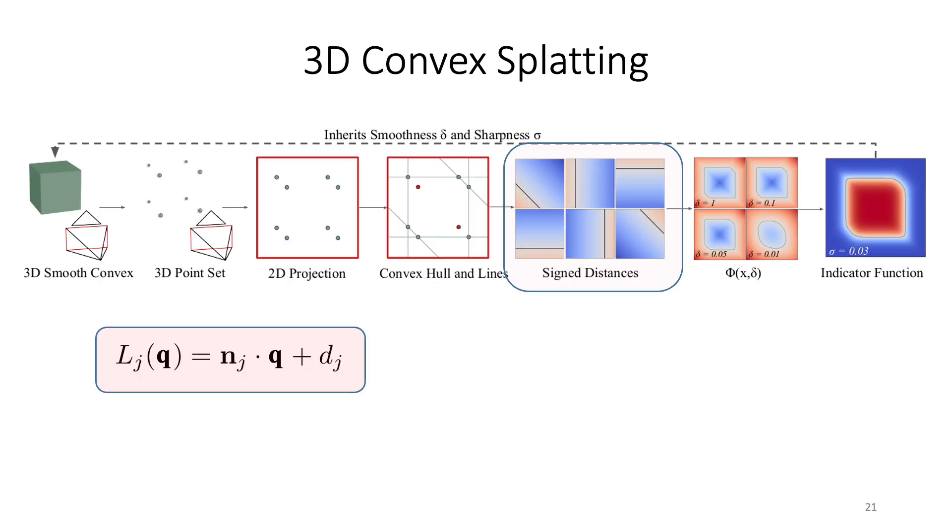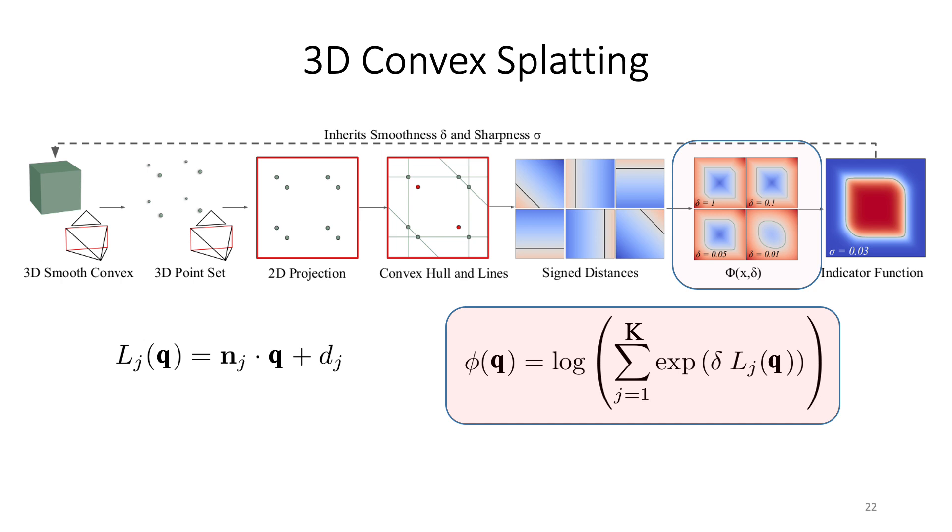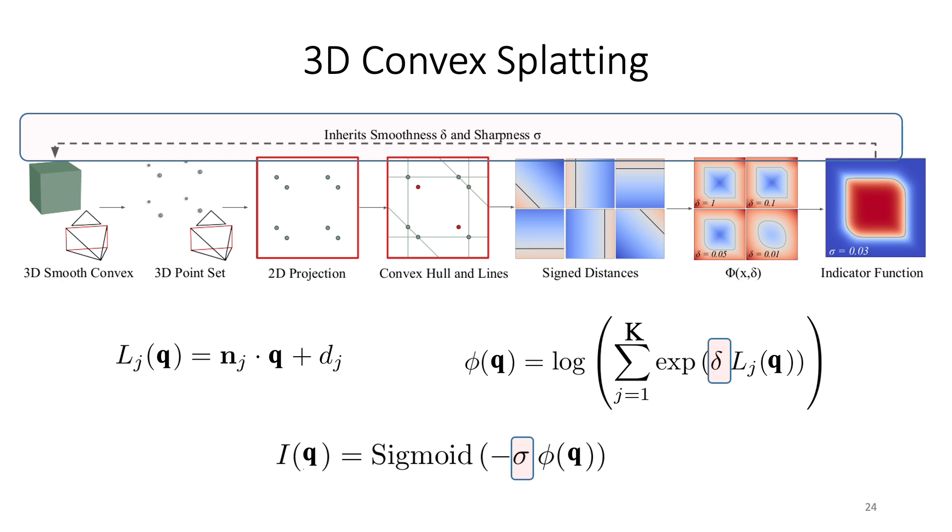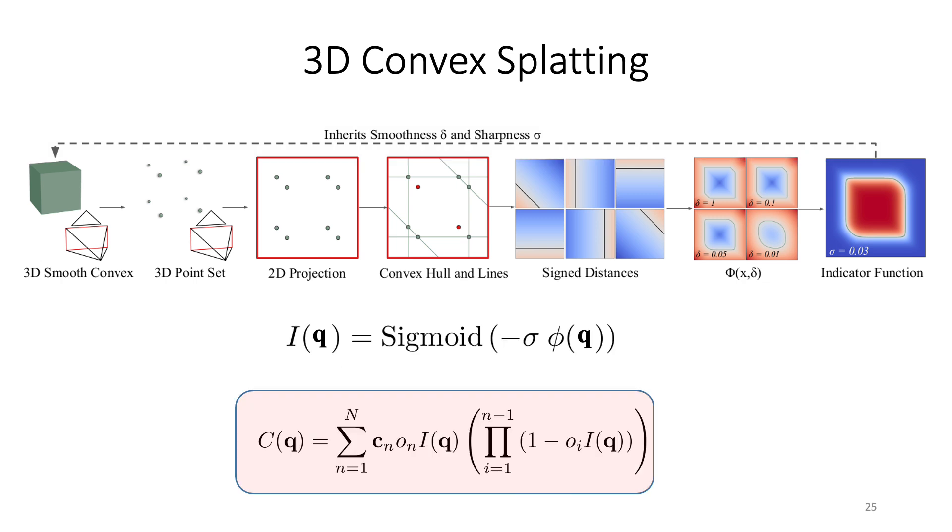Once we take these points, we construct the sine distances and the phi function and finally the indicator function, which we will be eventually using in the rasterization formula. Notice that we take the delta, the sigma, the sharpness and smoothness parameters inherited from the 3D smooth convex to the 2D smooth convex we actually render eventually. We use the rendering equation with alpha blending similar to how 3D Gaussian Splatting combines multiple elements with different opacities.